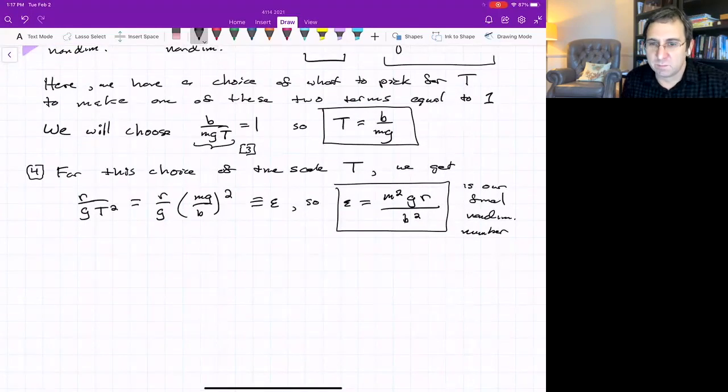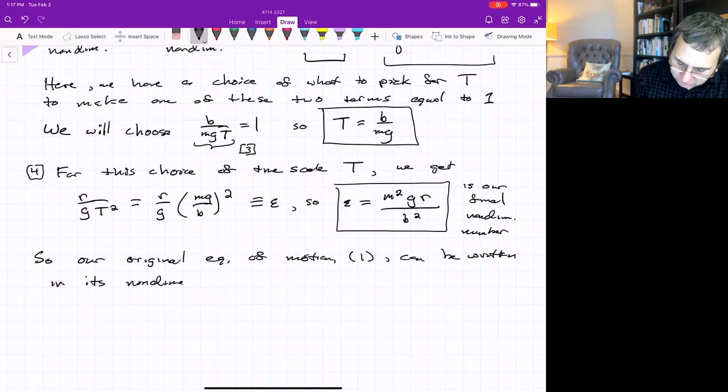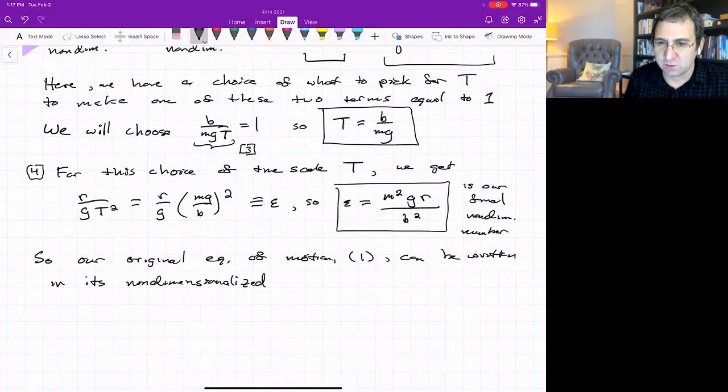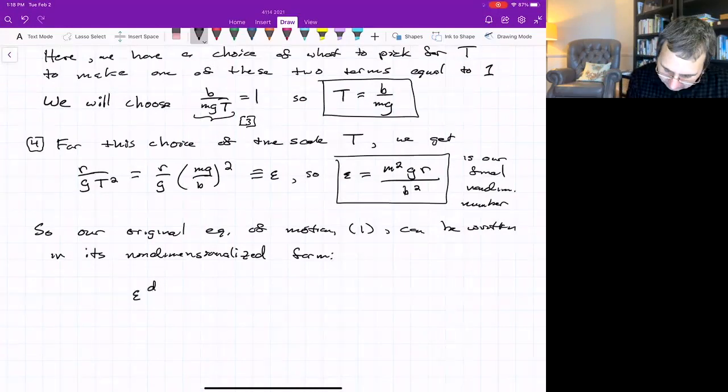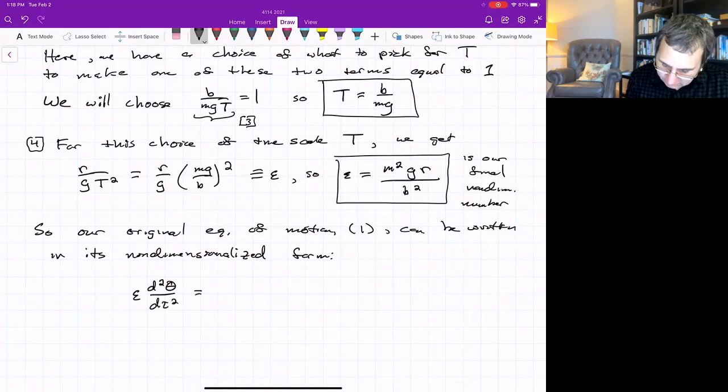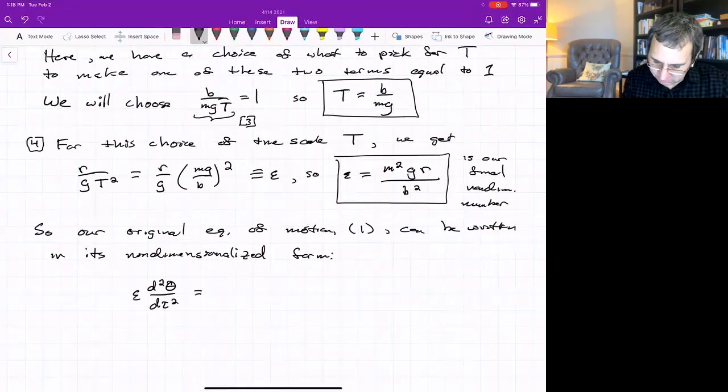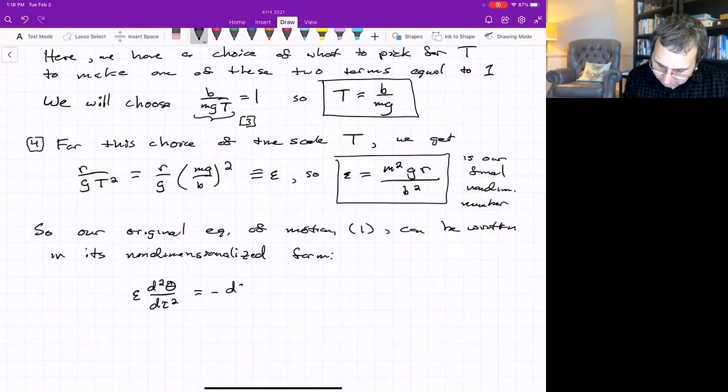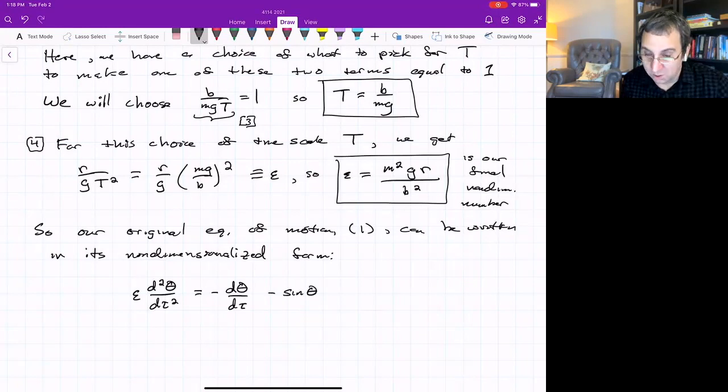So now our equation of motion can be written in its non-dimensionalized form. I think we call that equation 1. We did make a choice, a choice of timescale. We might not say this is the non-dimensional form, which is just a non-dimensional form. We've got epsilon times this second order derivative term equals, because of our choice of timescale, the coefficient of the damping term is just 1. And then there's also coefficient 1 in front of this gravity term.